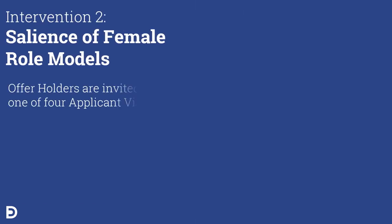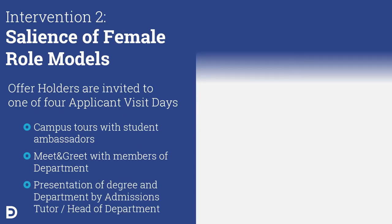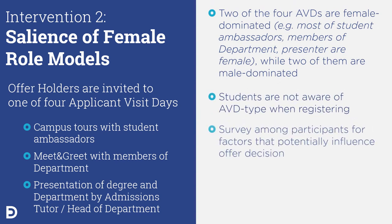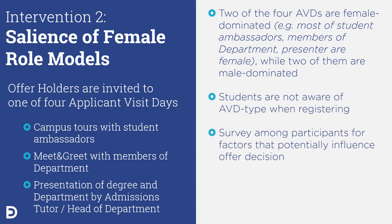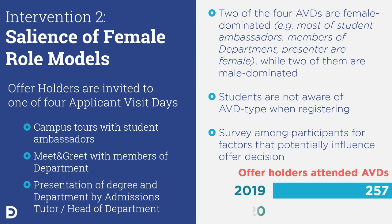The second intervention uses the salience of female role models during applicant visit days, to which all offer holders are invited. We designed those applicant visit days in such a way that some of those days are female dominated, meaning that most of the student ambassadors but also most of the members of the department who were present on these days are female.